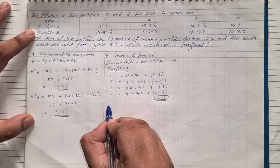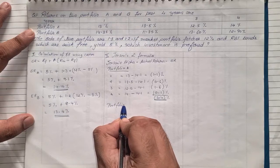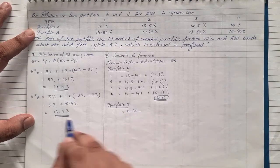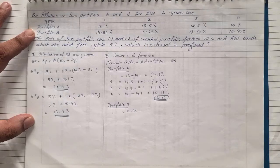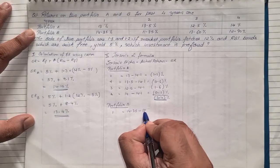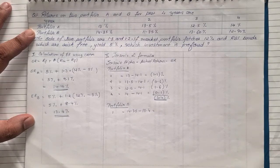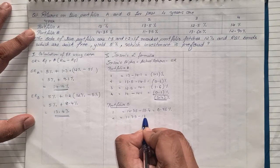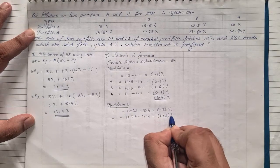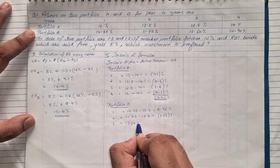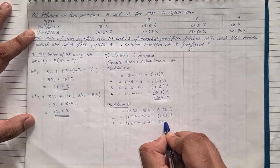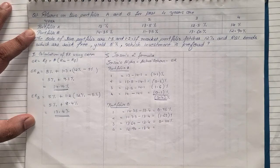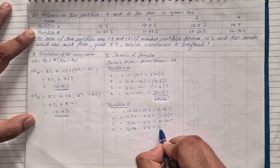Similarly for portfolio B: year one is 14.35 minus 13.4 equals positive 0.95 percent. Year two is 11.75 minus 13.4 equals negative 1.65 percent. Year three is 13.60 minus 13.4 equals positive 0.20 percent. Year four is 12.90 minus 13.4 equals negative 0.50 percent.